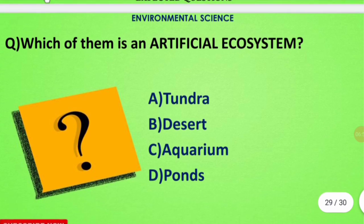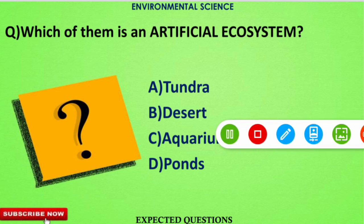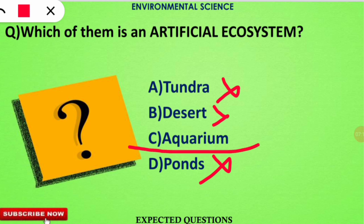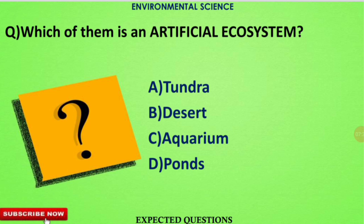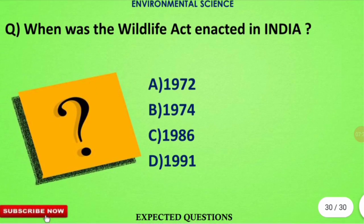The next question asks: which of the following is an artificial ecosystem? We can eliminate options one by one — tundra, desert, and ponds are all natural ecosystems. An aquarium, being made by humans, is the correct answer as it is an artificial ecosystem.